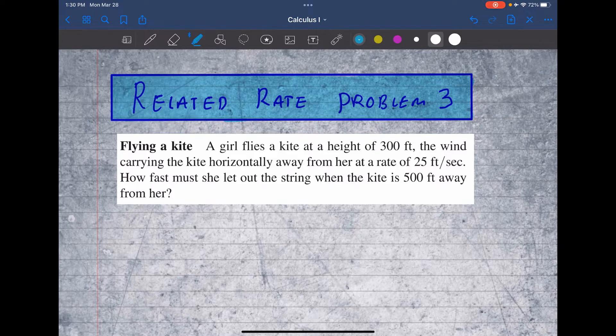Suppose a girl flies a kite at a height of 300 feet. The wind carrying the kite horizontally away from her at a rate of 25 feet per second. Now that's already a lot of information for you to be able to create a picture and see what we're looking for.